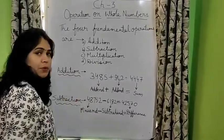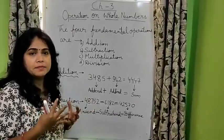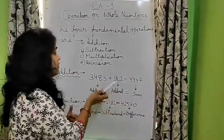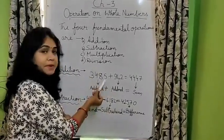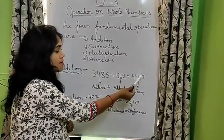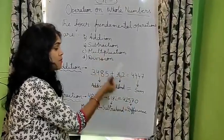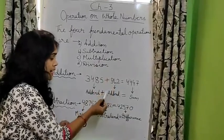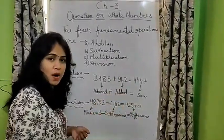In addition what we do? We take numbers and add them, combine them and find the total. So the numbers which are being added, in this you can see that 2 numbers are added and 1 result we have got. That is the result of the addition. So the numbers which are being added are called addends and the result of addition is called sum.